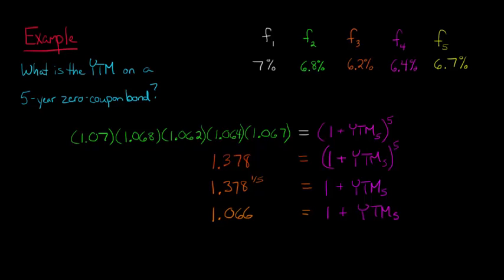And then now we just subtract 1 from each side. So that's going to give us 0.066 is equal to our yield to maturity on a five-year zero coupon bond. And another way of expressing that, 0.066, is we could just say 6.6%. That's the same thing, it's just our way of expressing that decimal.